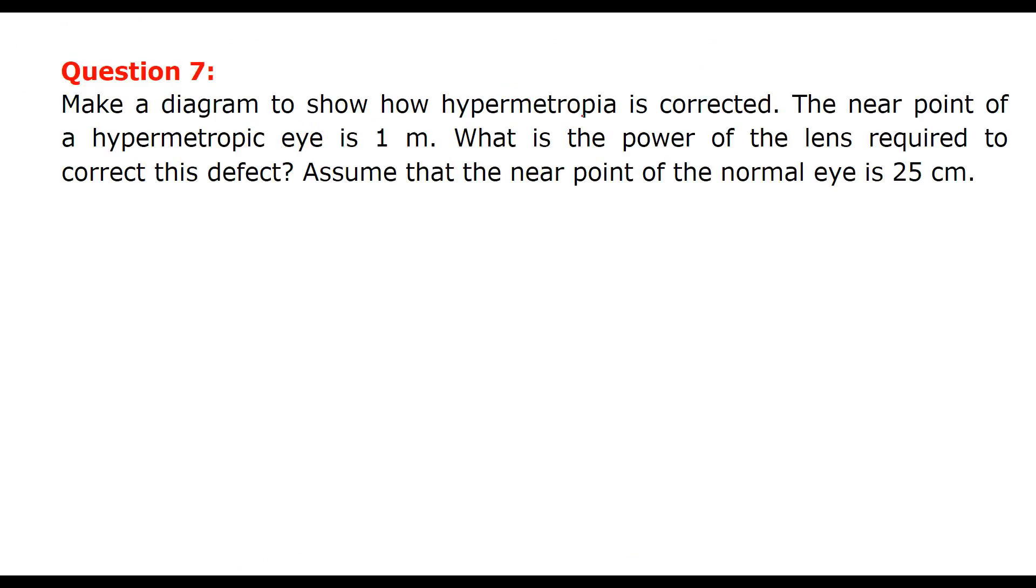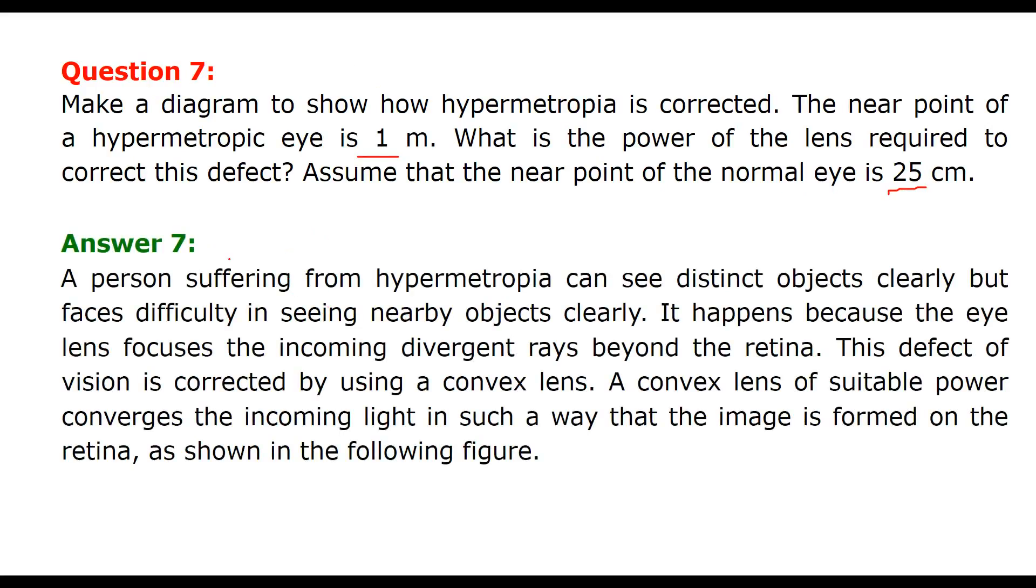Make a diagram to show how hypermetropia is corrected. The near point of hypermetropic eye is 1 meter. What is the power of the lens required to correct this defect? Assume that near point of normal eye is 25 centimeter. As we indicated earlier, the person who is suffering from hypermetropia can see distant objects clearly, but when it comes to objects which are nearby, he faces difficulty in seeing nearby objects clearly. Why? Because here the eye lens focuses the incoming divergent ray beyond the retina.